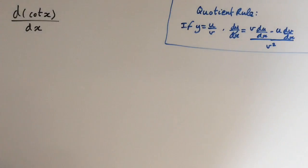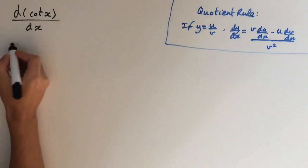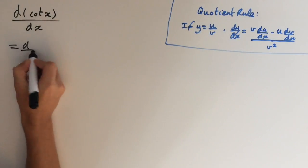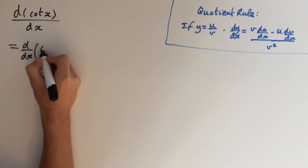Hey guys, in this video I'm going to show you how to find the derivative of cotangent. So what we can do is we can write cot x as cos x divided by sin x.